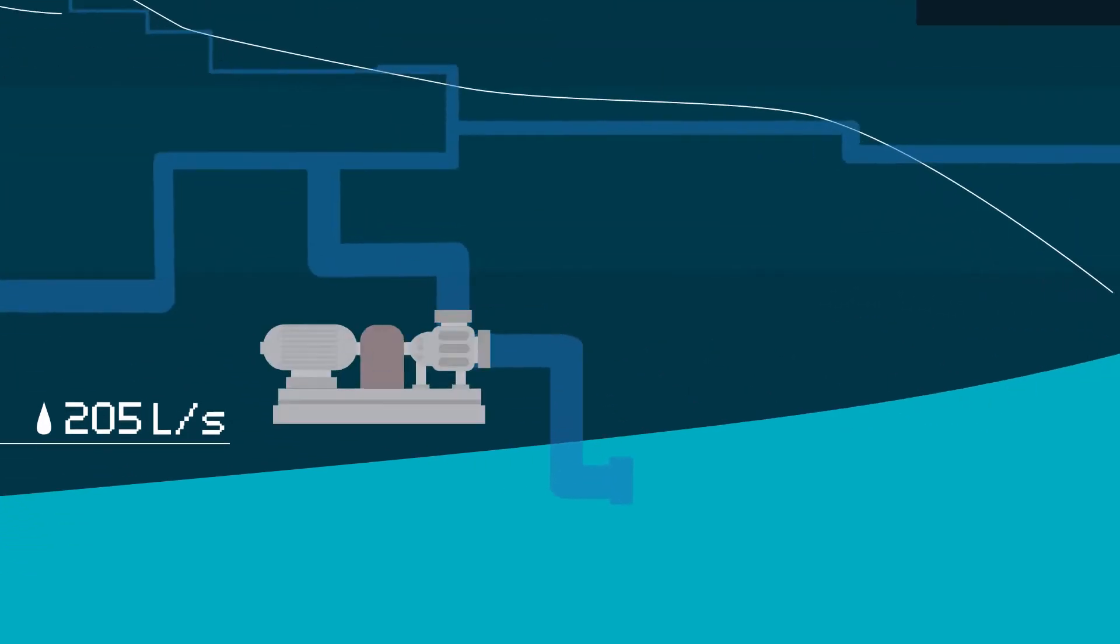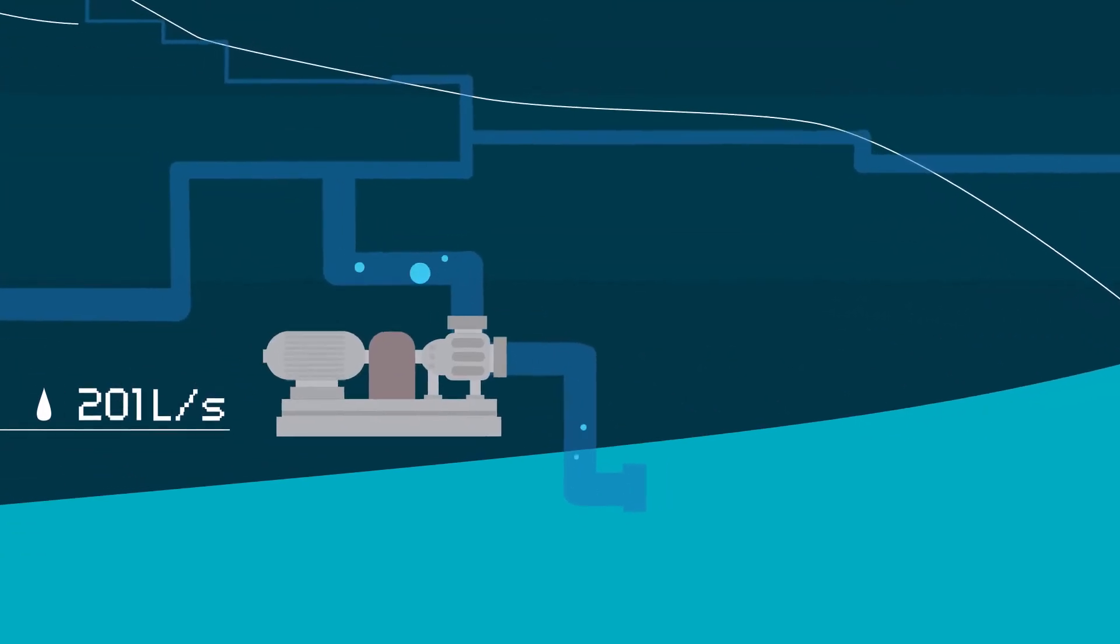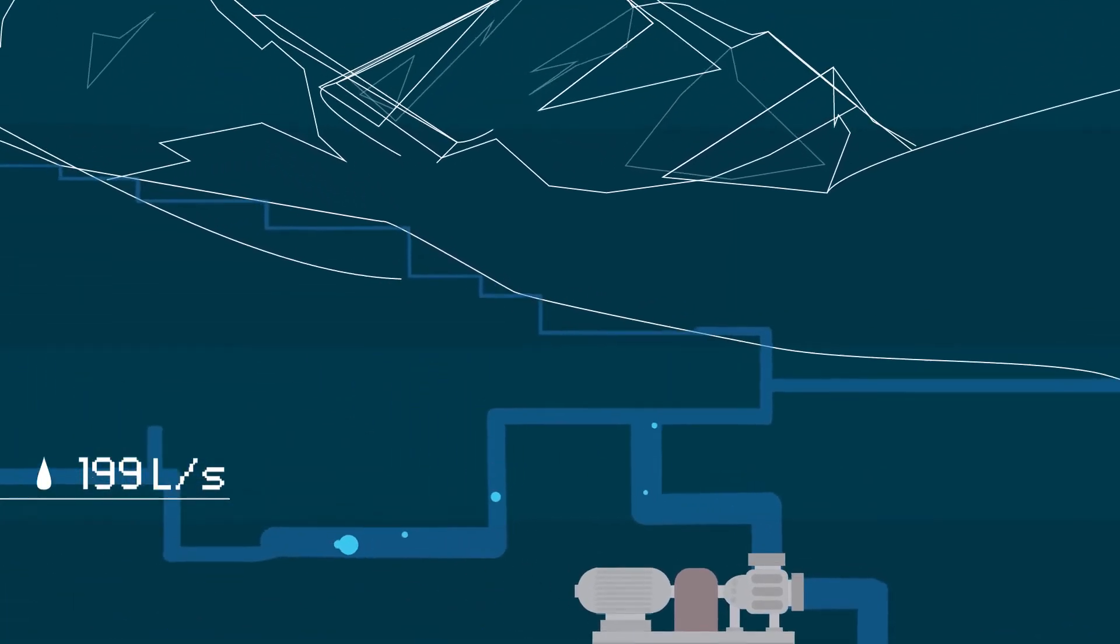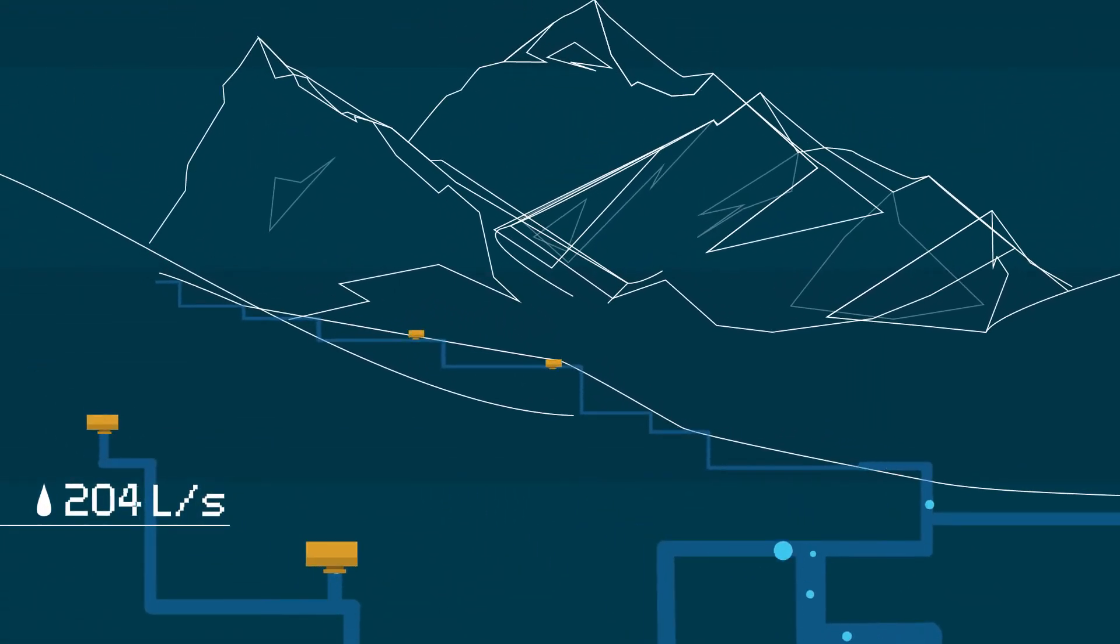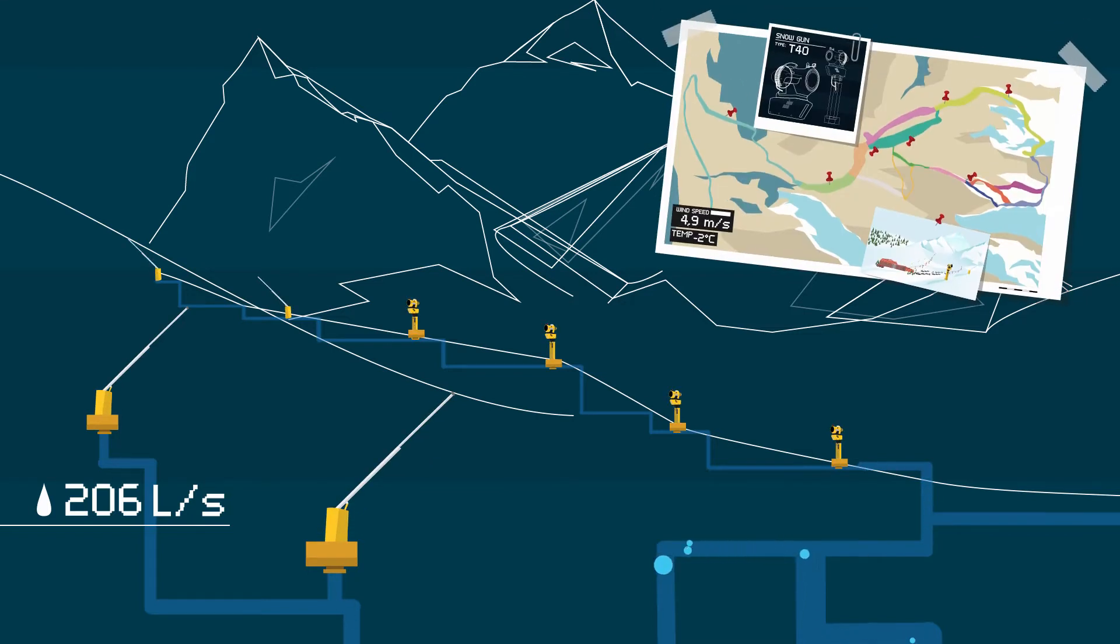Installation can begin now. Pumps at the lake extract water, which is transported to the ski resort via underground pipes. Shelters are set along the pipes to control water flow and snow guns are installed on top. The master plan tells us which type of snow gun to place where.